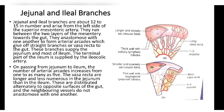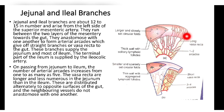The jejunal and ileal branches are about 12 to 15 in number and arise from the left side of the superior mesenteric artery. They run between the two layers of the mesentery, forming arterial arcades which give off straight branches called vasa recta to the gut. These branches supply the jejunum and most of the ileum. The terminal part of the ileum is supplied by the ileocolic artery. There are short vasa recta and long vasa recta visible in the diagram.